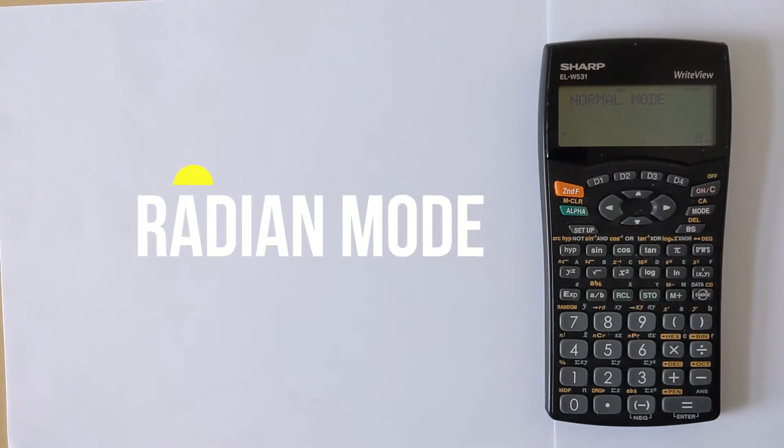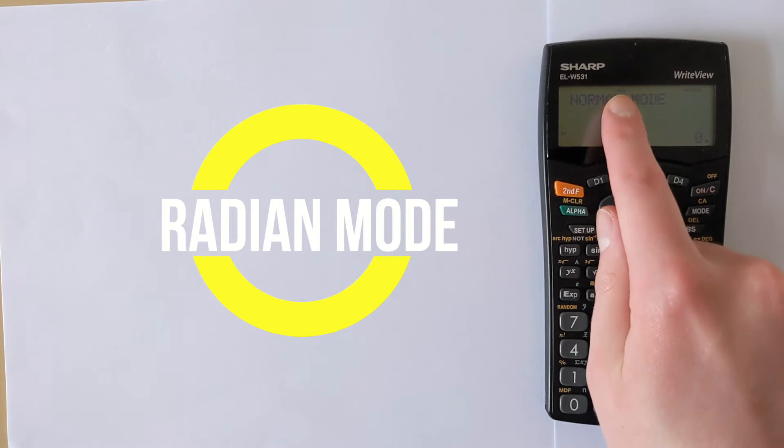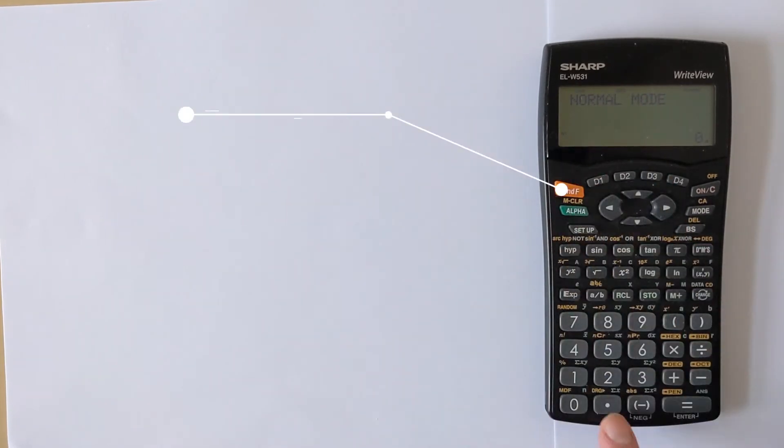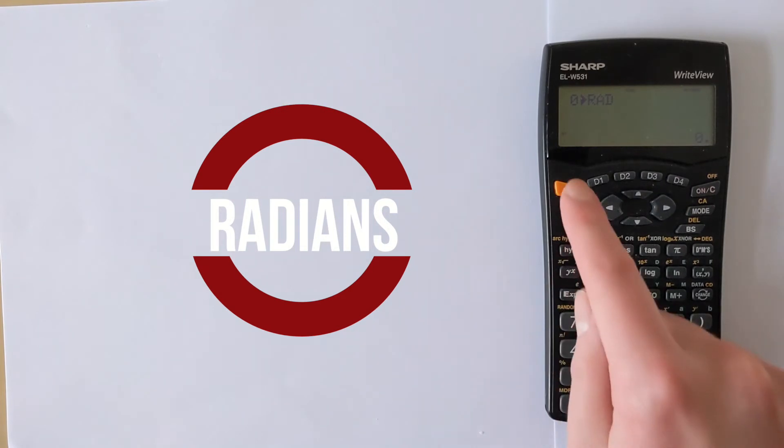So let's start by putting it into radians. We can see initially it's in degrees looking at the top of the calculator. If we press second function and then this dot here, we now have the calculator in radians and you can see at the top it's changed to rad for radians.